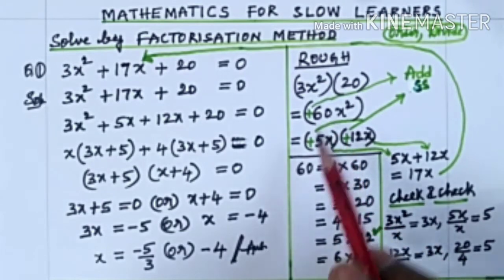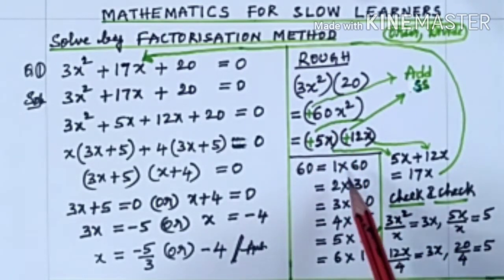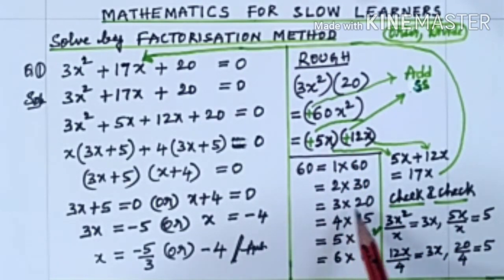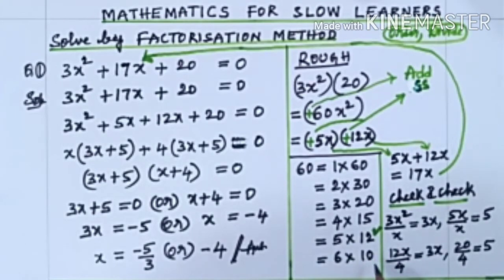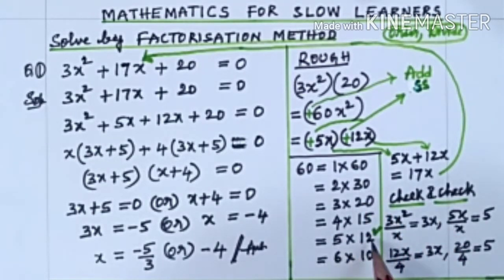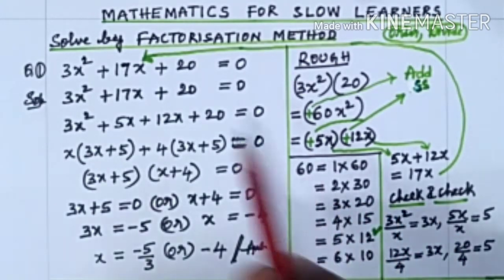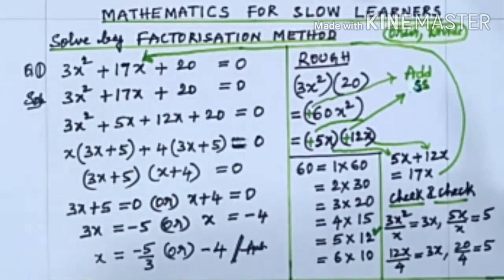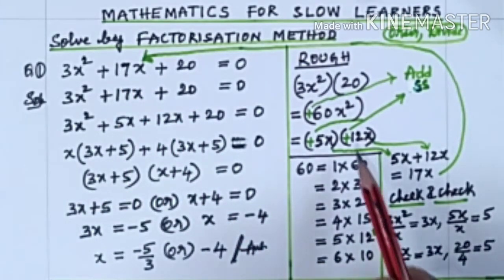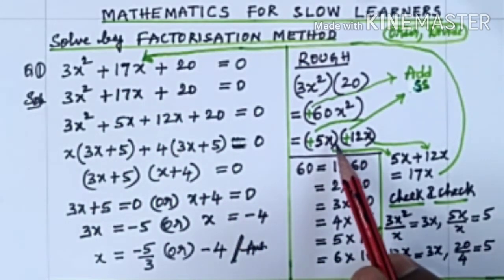Now, 60 can be written as 1×60, 2×30, 3×20, 4×15, 5×12, 6×10. But of these, if we add 5 and 12, we can get 17. So we have to take 5 and 12 here.